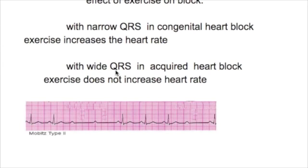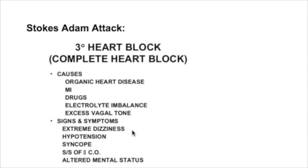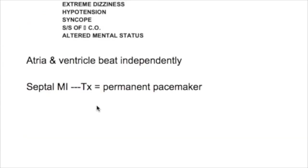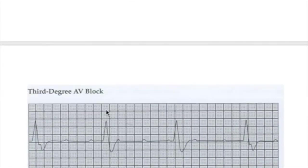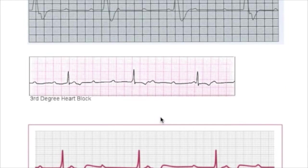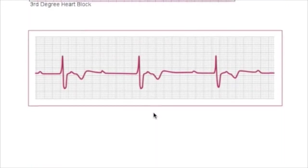The third degree heart block, also known as Stokes-Adams attack, occurs when the atria and ventricles beat independently. It presents with extreme dizziness, hypotension, syncope, and altered mental status. It usually occurs in septal MI or damage to the bundle of His, and the treatment is a permanent pacemaker. On ECG, you can see the atria and ventricles beating independently with a wide, slow QRS complex.